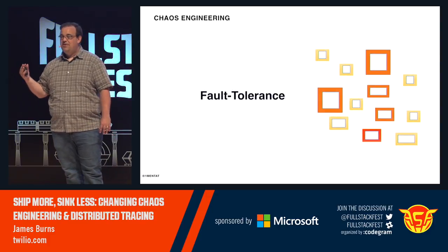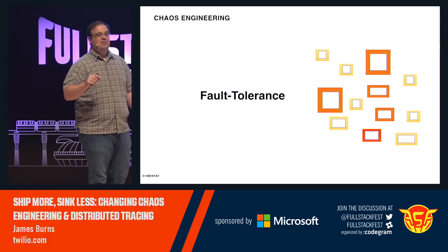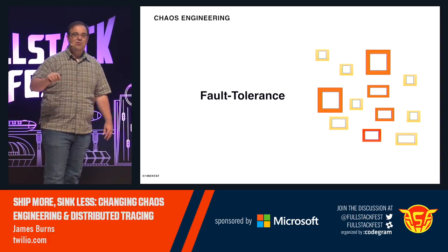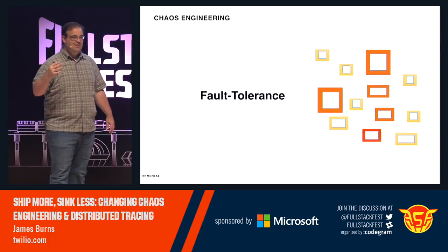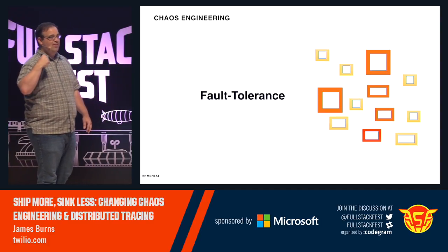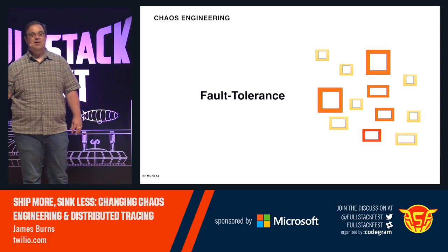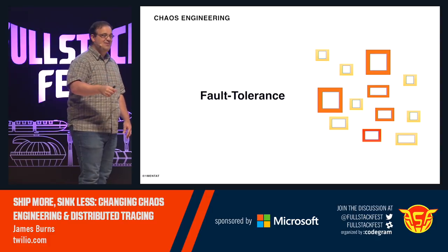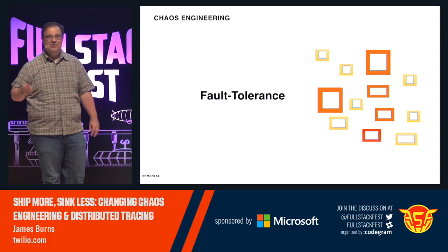Fault tolerance is an ideal we shoot for — that your systems can be resilient and withstand failures. But there's a trap in believing you can be done, that at some point your system will be fault tolerant. The whole point of microservices, DevOps, and Agile is to make change faster. Because you're always changing things, you're going to introduce risk and new failure modes. Instead of believing you'll create a fault tolerant system once, engage in this process continuously. We do chaos game days every week on my team — before we plan the week, we ask: is our system still resilient?